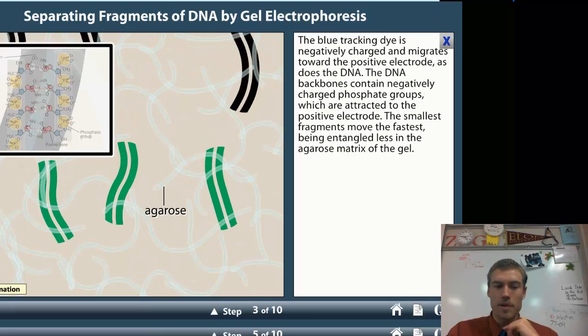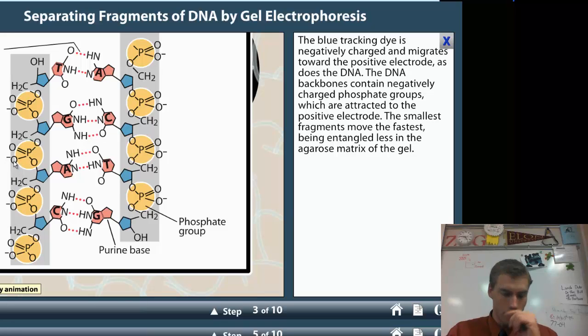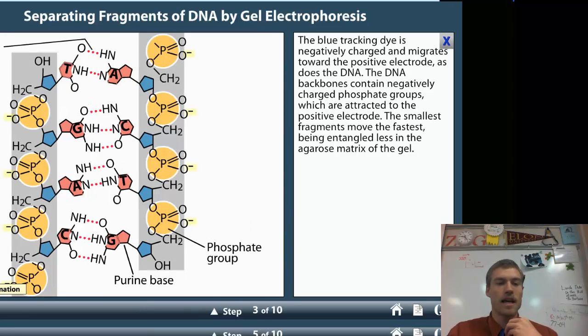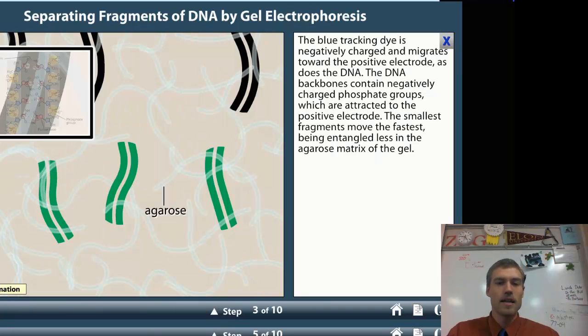So we take a look at a piece of DNA, you notice that on the outside of the sugar phosphate backbone, we've got these negatively charged oxygens. So we've got these negatively charged oxygens, and what happens is that because the DNA is loaded next to the negative side, that repels.